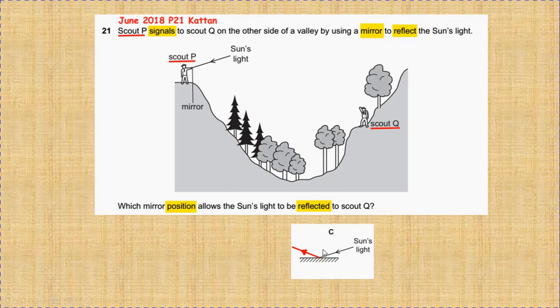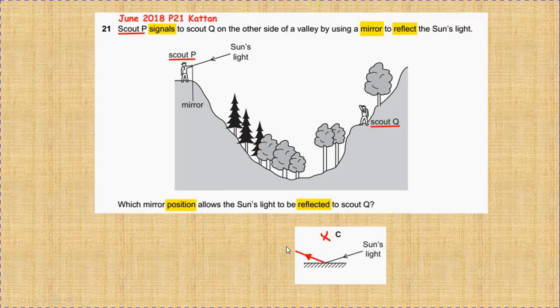In C, we have found the sun's light be reflected away from scout Q. C is incorrect.